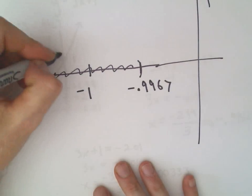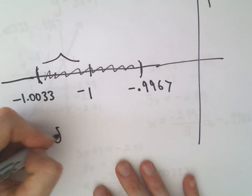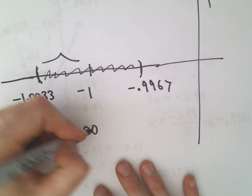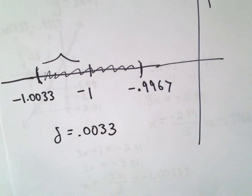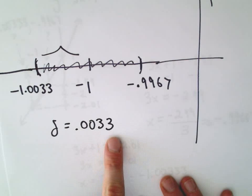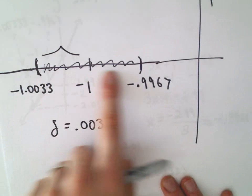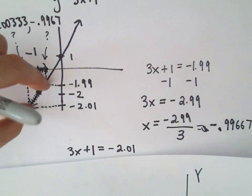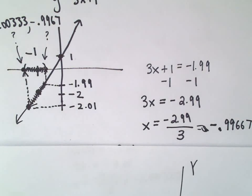So in this case, if you think about the length of this interval, delta is just going to be 0.0033. And that's going to be our value of our delta. It says if you take, if you go at most 0.0033 away from the number negative 1, it says we're going to get y values in the desired range.